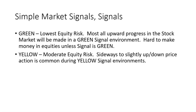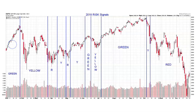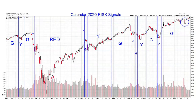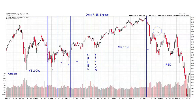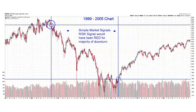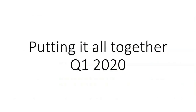The yellow signal means there's moderate equity risk, and sideways to slightly up or down price action is very common in a yellow signal environment. The red signal has the highest equity risk, and the worst sell-offs including bear markets will happen when the signal is red. To recap: green is the best risk-reward ratio for equity investors; red is the worst, and encompasses downturns like Q4 2018, Q1 2020, and the bear markets of 2000–03 and 2007–09.